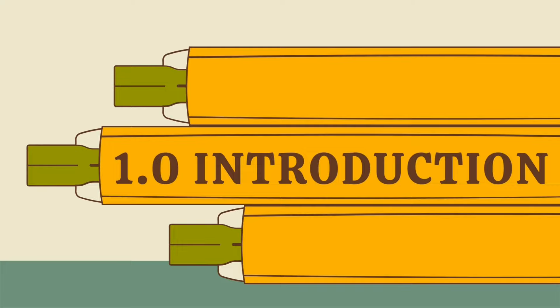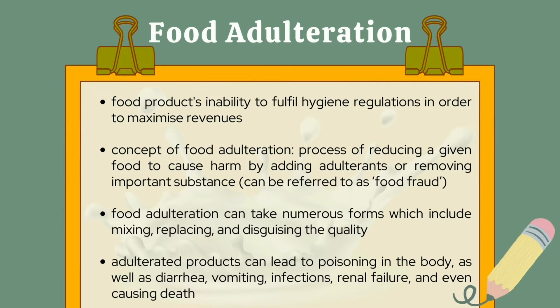Food adulteration refers to a food product's inability to fulfill hygiene regulations in order to maximize revenues. It occurs widely and in a variety of forms, affecting nearly all food commodities. The process of reducing a given food to cause harm by adding adulterants or removing important substances is the concept of food adulteration, which can also be referred to as food fraud. A food product is deemed adulterated if the essential ingredients are eliminated or replaced with other constituents.